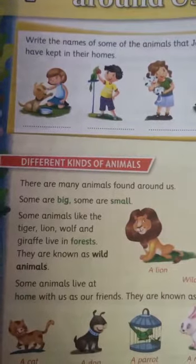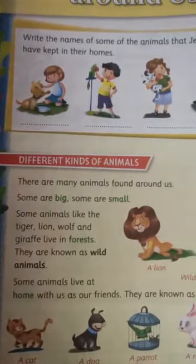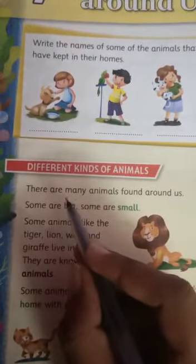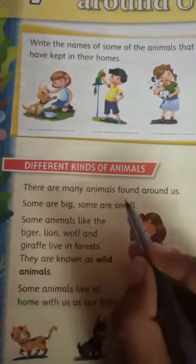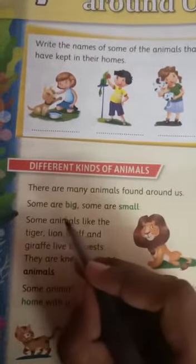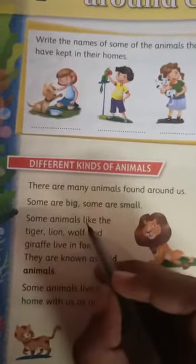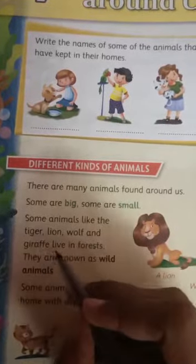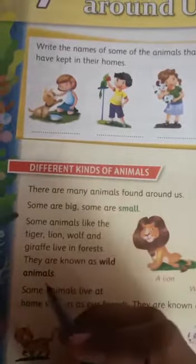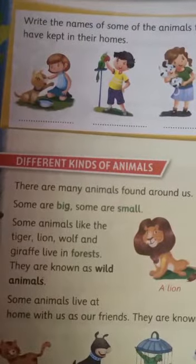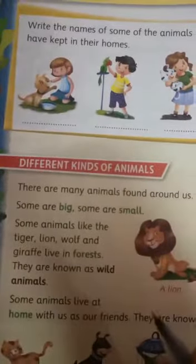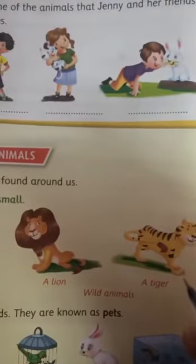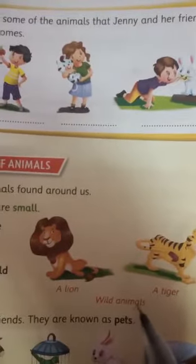Our first topic is different kinds of animals. There are many animals found around us. Some are big, some are small. Some animals like the tiger, lion, wolf and giraffe live in forests. They are known as wild animals. See here, the picture of lion and tiger is given. You all know that they live in the forest, so they are wild animals.